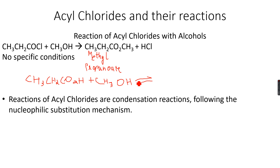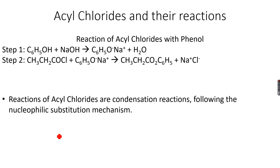We can convert the carboxylic acid into the acyl chloride, and then react the acyl chloride with the alcohol to form the ester. The other important difference is that the side product when we react an alcohol with a carboxylic acid is water, but when we react the alcohol with an acyl chloride the side product is HCl, because we have Cl instead of OH.